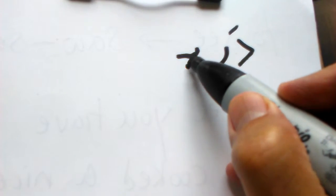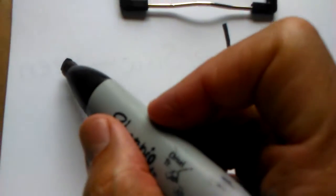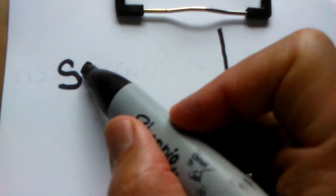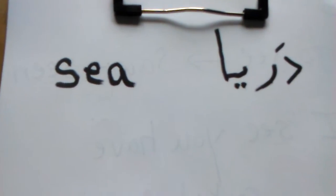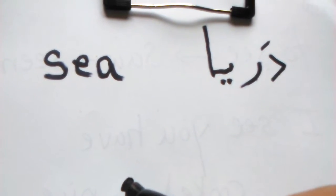Let's see. دریا. دریا. دریا, which means sea.